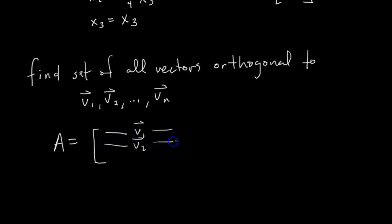You put the vectors as row vectors in this matrix: V1, V2, dot dot dot, VN. You transpose the vectors and put them as the rows of a matrix A. Then the solution—the set of all vectors orthogonal to V1, V2, ..., VN—is the null space of A.